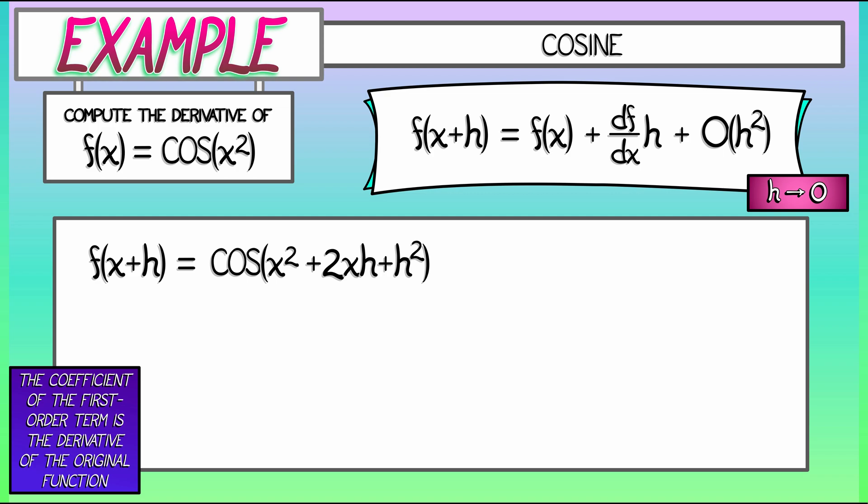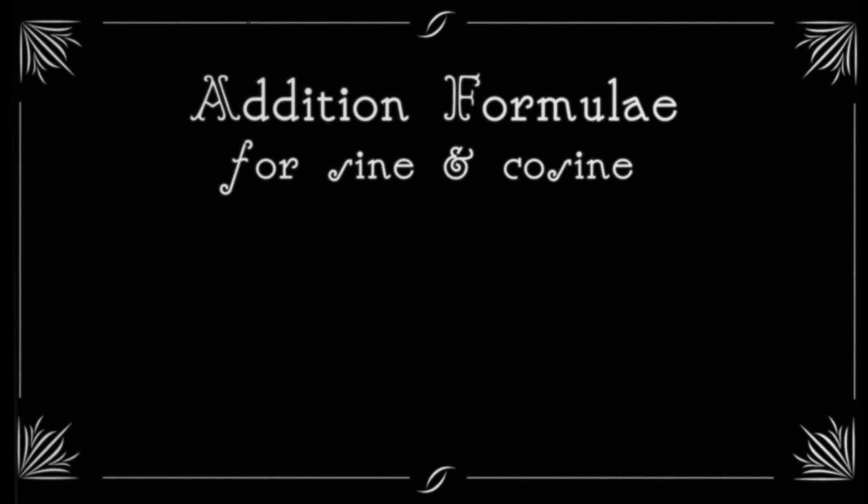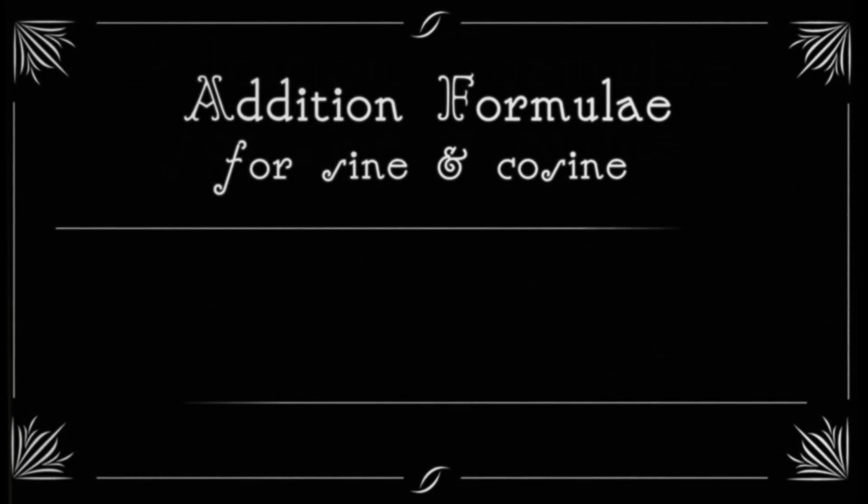Now, at this point, what I want to do is break that term up into two pieces. I'm going to say that this is cosine of x squared plus quantity 2xh plus h squared. So I'm taking the cosine of all of that. And now, let's recall the addition formulae for sine and cosine. Think back. Do you remember these? They're a little bit difficult to remember, but hopefully you've seen them before.